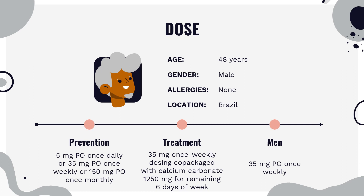Glucocorticoid-induced osteoporosis: 5 mg per day PO. Paget's disease: 30 mg per day PO for 2 months; monitor serum alkaline phosphatase. Osteoporosis in men: 35 mg PO once weekly.